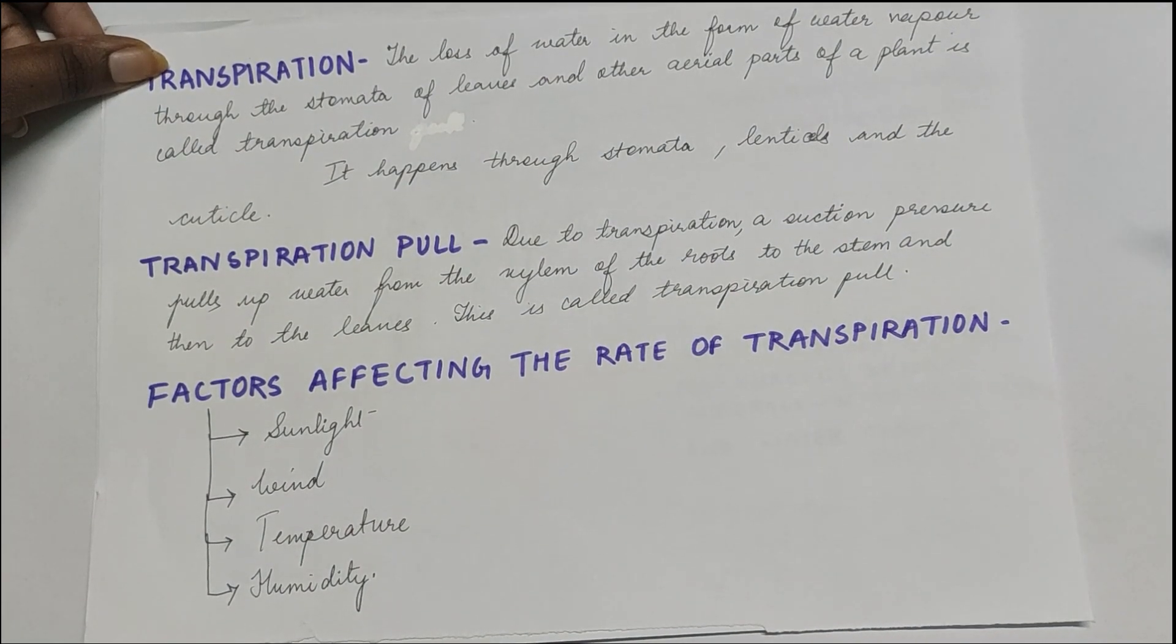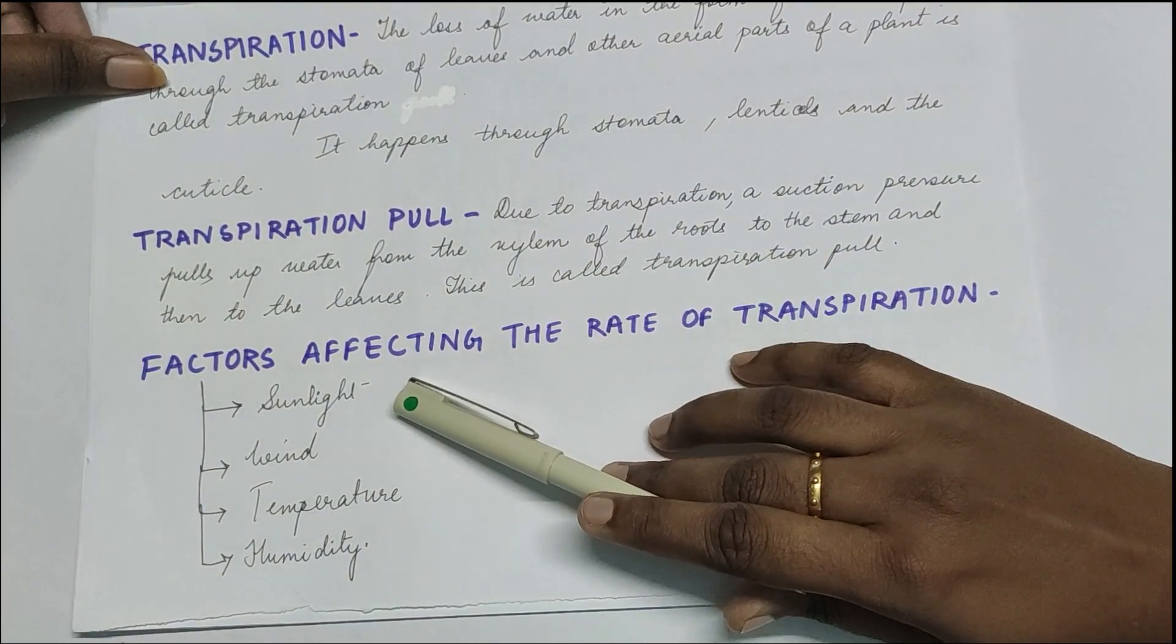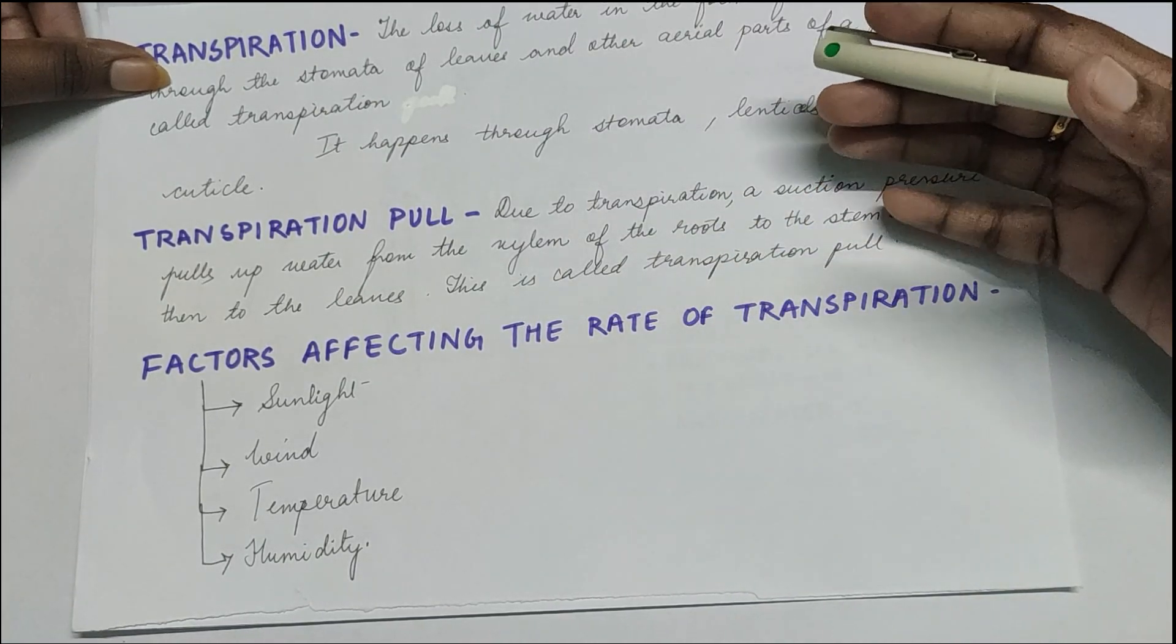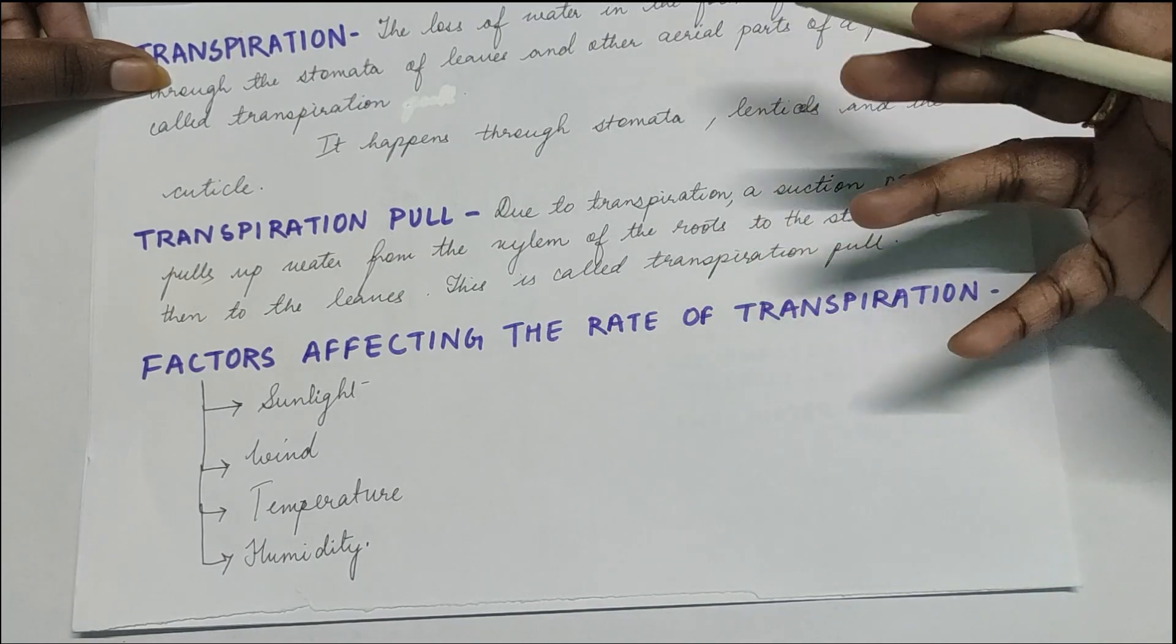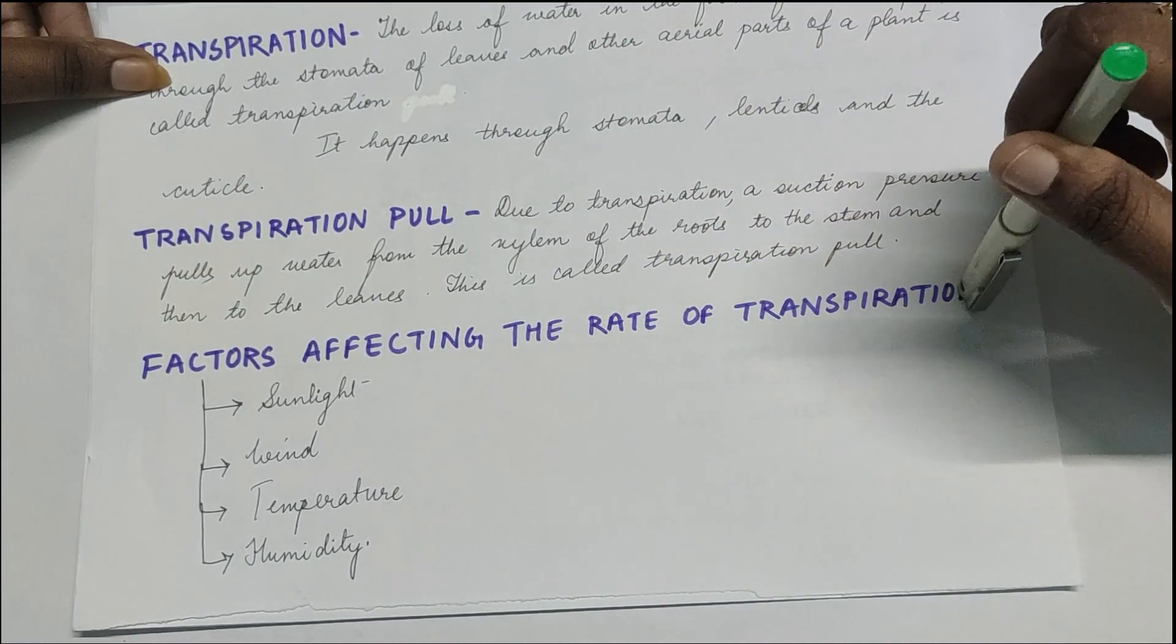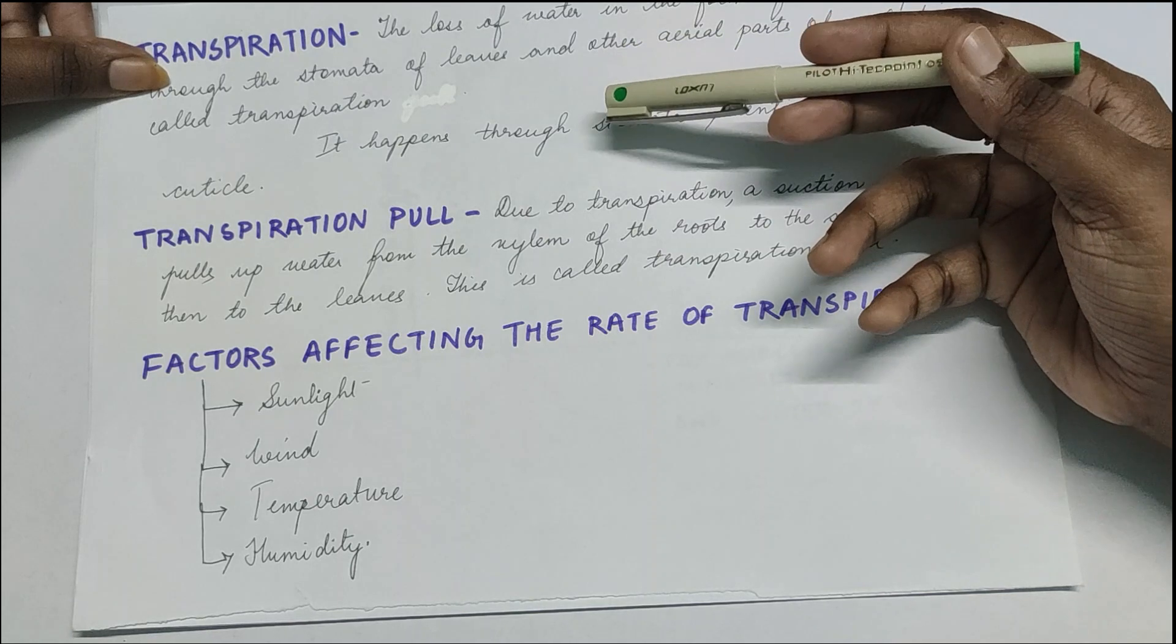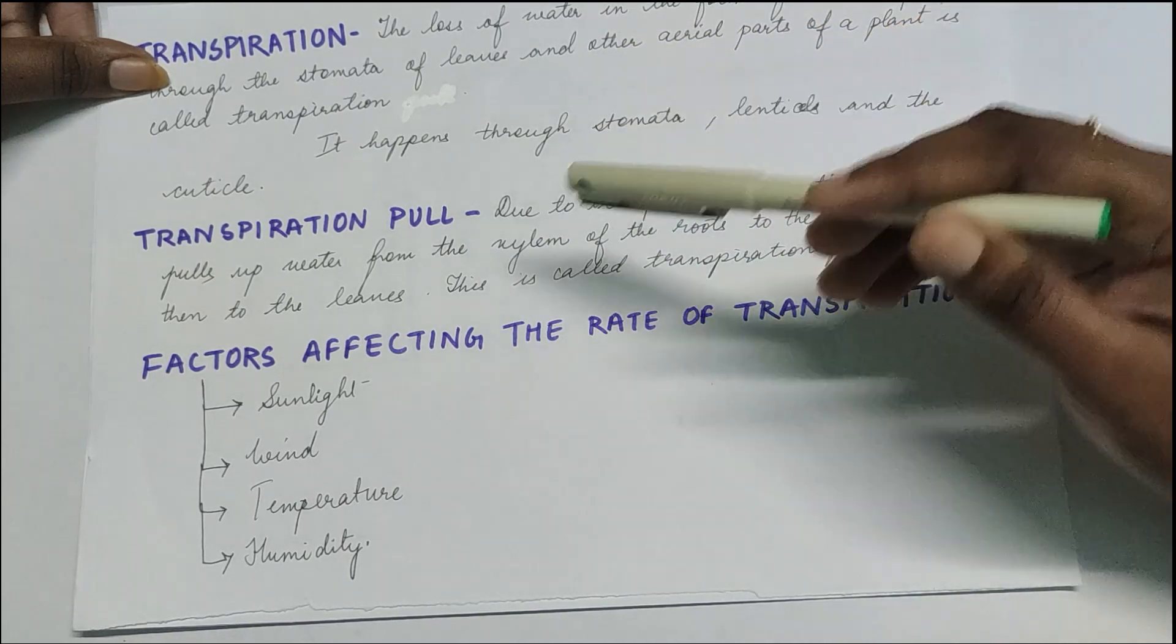As you can see I have mentioned sunlight, obviously, because transpiration will happen because of photosynthesis. The plants are opening up the stomata, water will be exchanged, gases will be exchanged, water will be coming out. So also we say that transpiration is a necessary evil. Because of sunlight, more the sunlight, more will be the rate of transpiration because the stomata will be open.